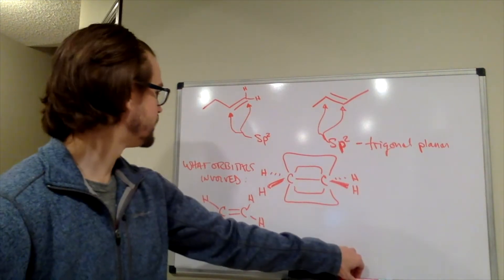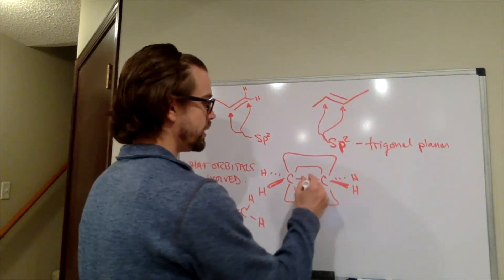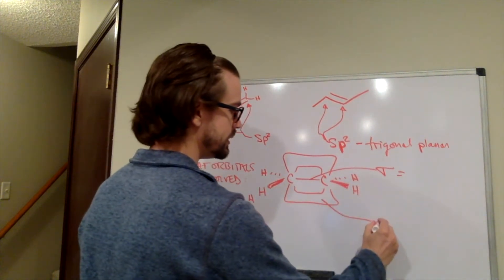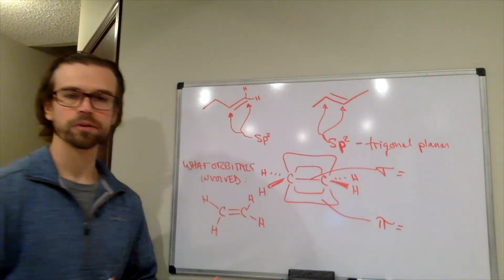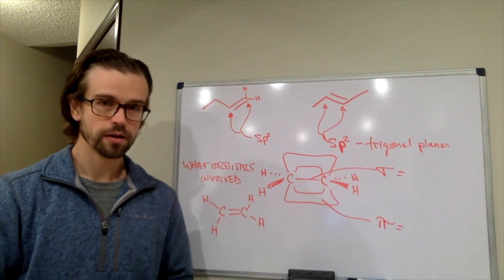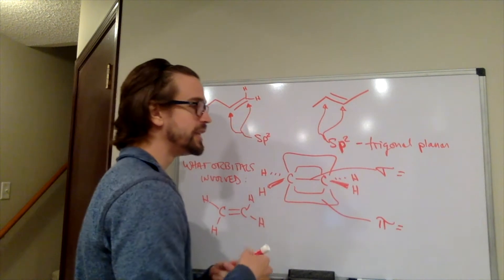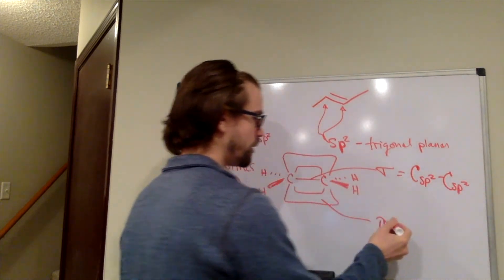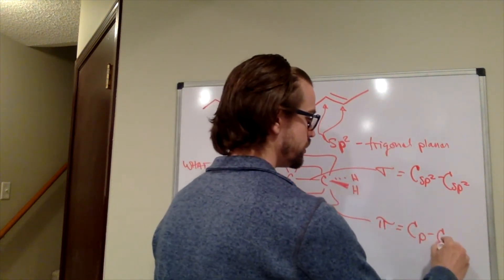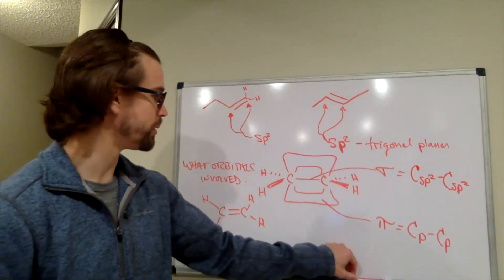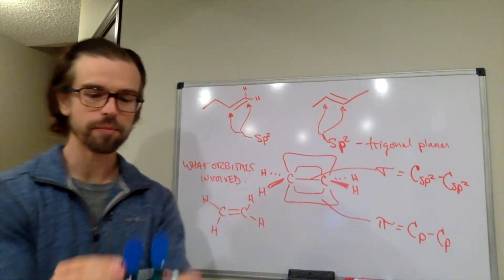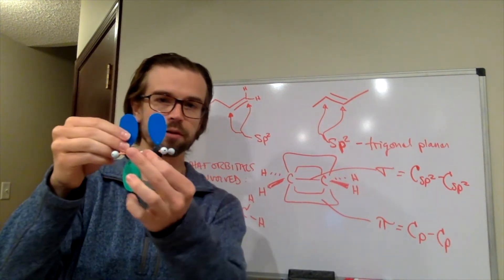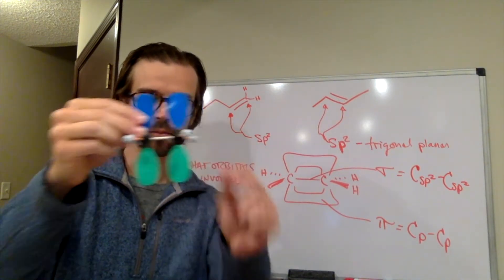Take a minute now and say, what orbitals are involved in this CC sigma bond here and also in this CC pi bond here? What orbitals are involved between the two carbons? Pause the video. To make the sigma bond, it would be a Csp2 orbital bonded to a Csp2 orbital. To make the pi bond, we have a Cp orbital bonded to a Cp orbital. The p orbitals overlap to make the pi bond. The hybrid orbital is what is making that sigma bond that's directly between there.